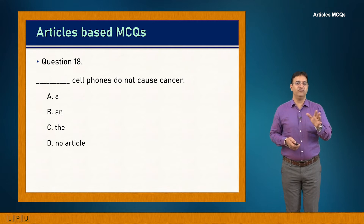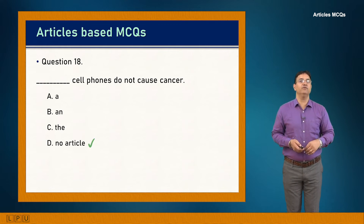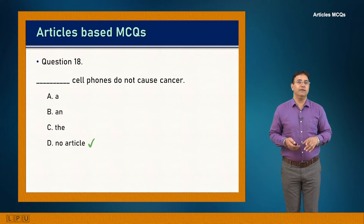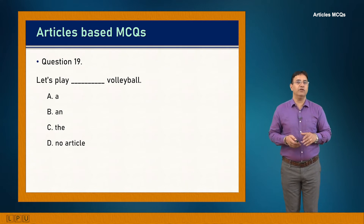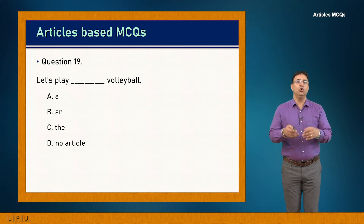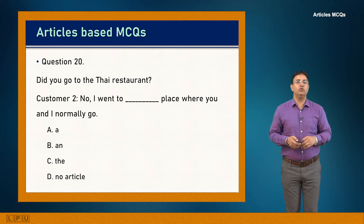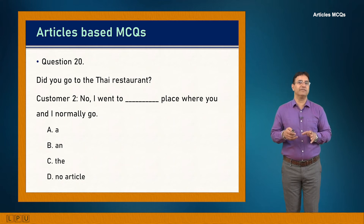Question 18: Dash cell phones do not cause cancer. Again a general statement with a plural noun, so no article is needed. Answer is D: 'Cell phones do not cause cancer.' Question 19: Let's play dash volleyball. For sports and games, no article is used. Answer is D: 'Let's play volleyball.'